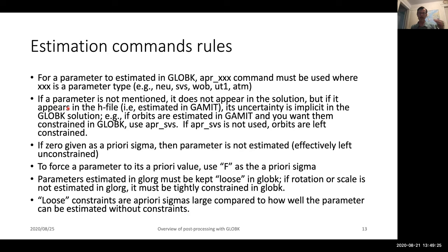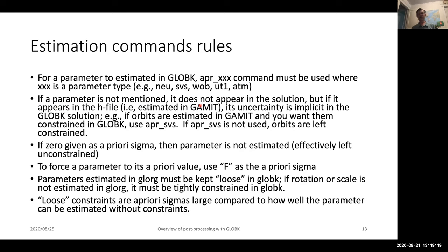An important thing: the binary H files come in with a set of parameters that are embedded in those files. What happens to those parameters depends on what you tell GLOBE-K to do. If you do not tell GLOBE-K what to do with a parameter, it simply leaves it in its unconstrained state and essentially drops it out of the covariance matrix. When you drop out rows and columns out of covariance matrices, that is essentially equivalent to having that parameter left free and unconstrained from that point on. In particular, if you ran relax mode in GAMUT and then when you ran GLOBE-K you didn't tell it anything about orbits, those orbits would be left completely free, which in a short baseline mode could degrade your solution considerably.